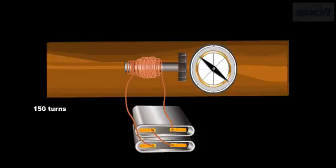If the same procedure is carried out with coils of 250, 350, and 450 turns, then also the deflection of the magnetic needle with one cell is less than the deflection obtained with two cells.